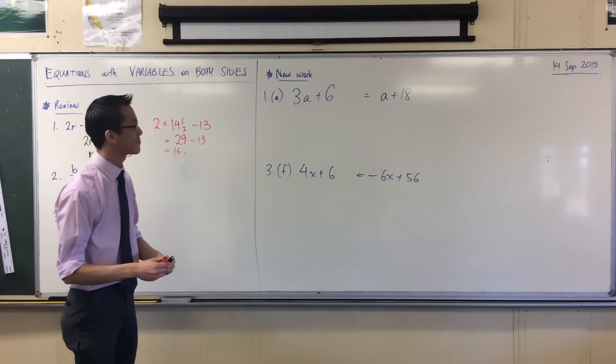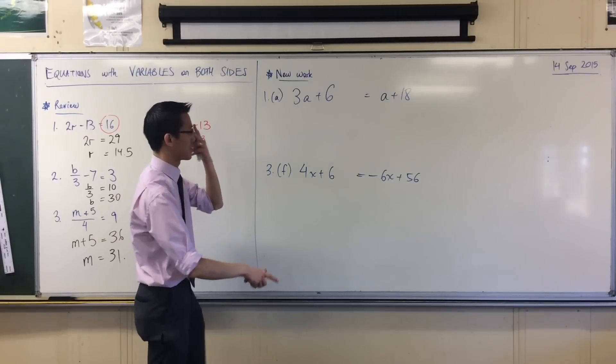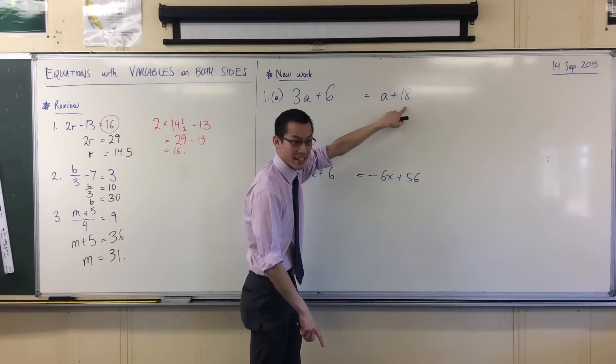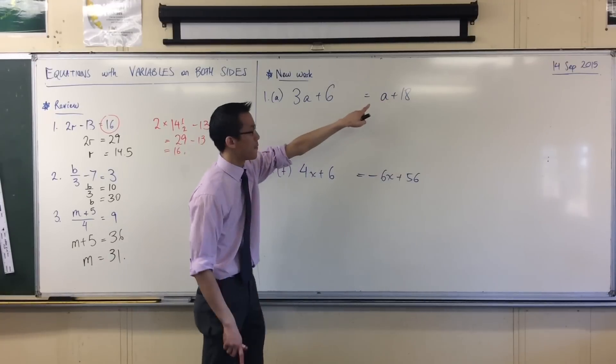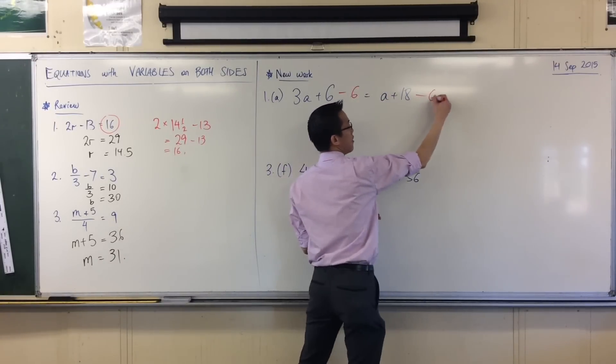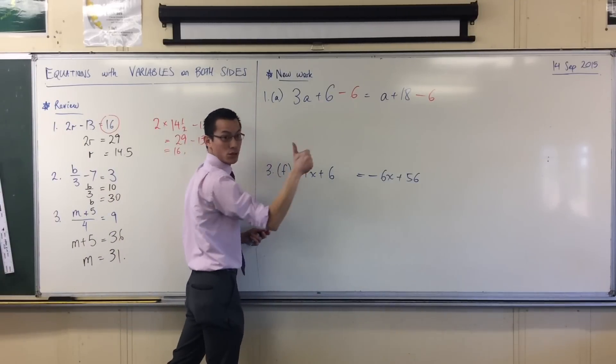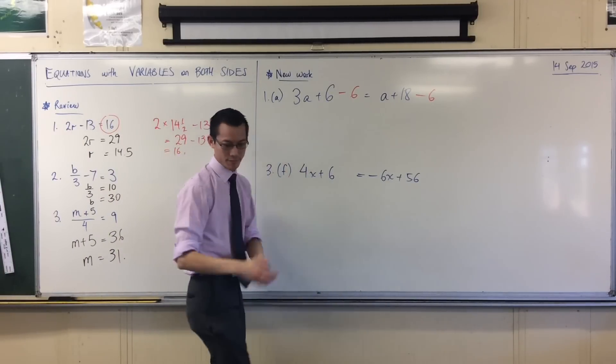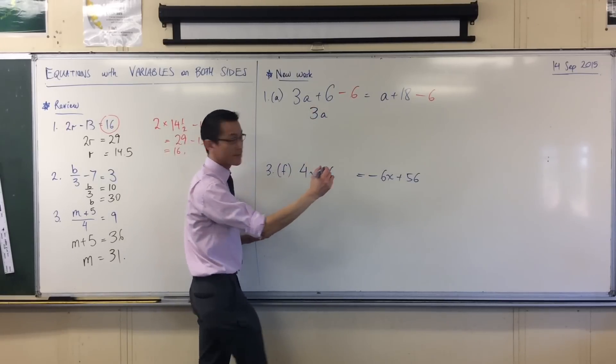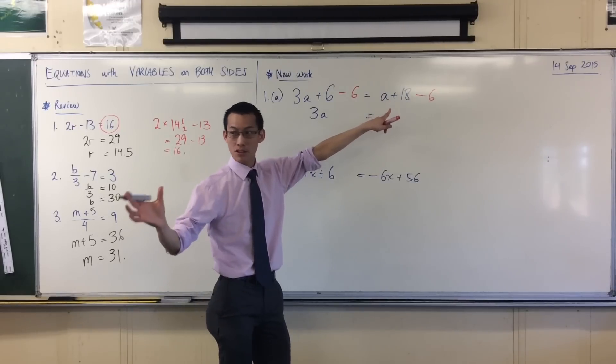Brandon suggests taking away 6 from both sides. I'm going to write that down and maybe you guys want to follow with me. We'll take away 6 from both sides. That's going to get rid of this 6 on this side. I'm going to write that with the right color as 3a. Now, what's happened to the a on this side?